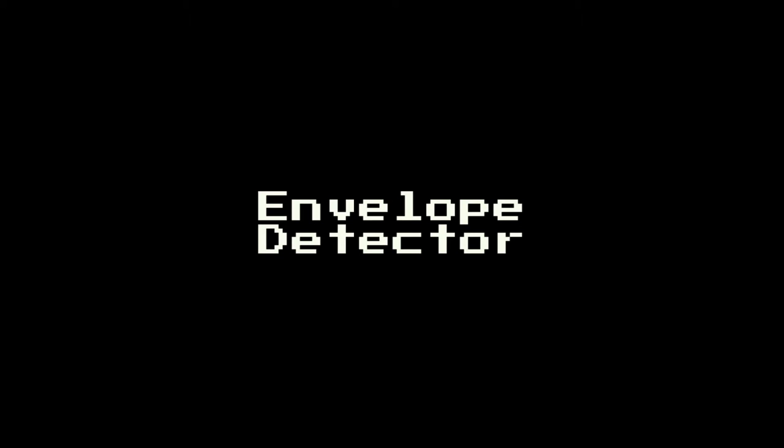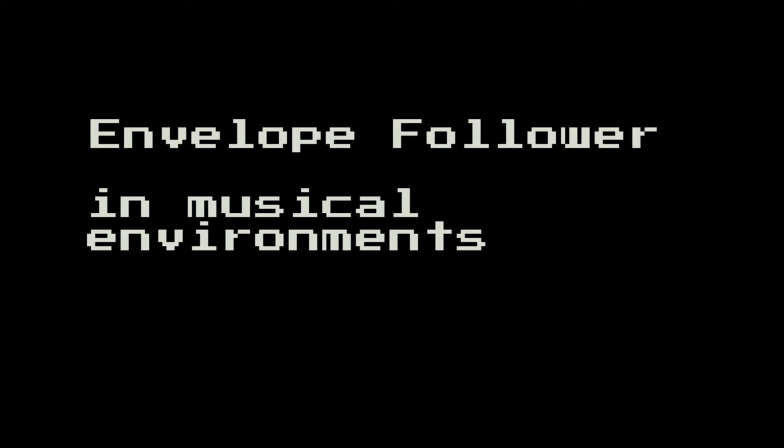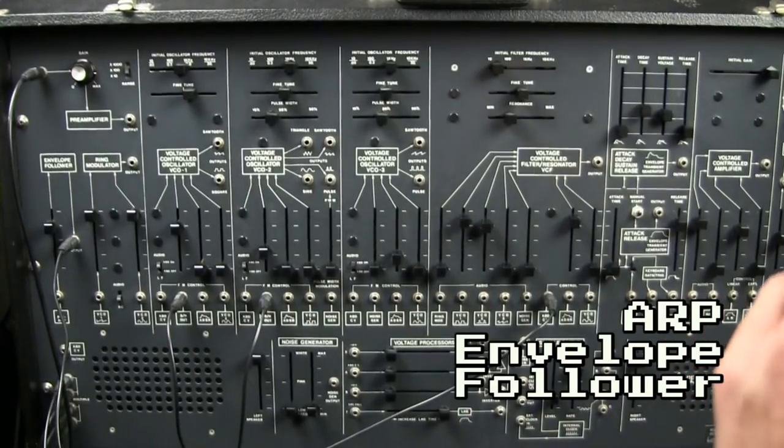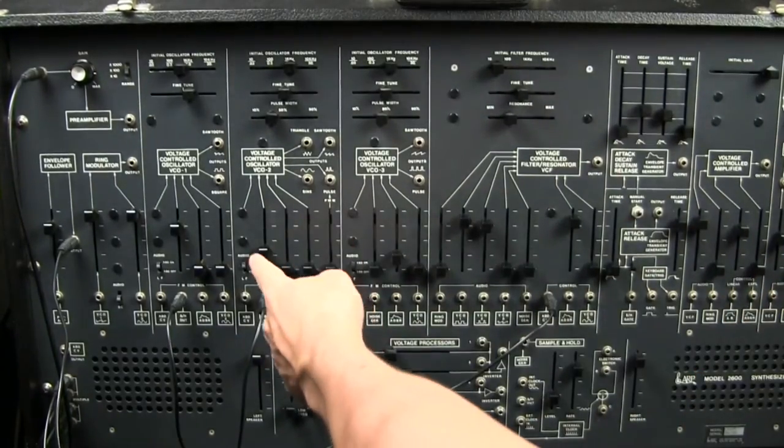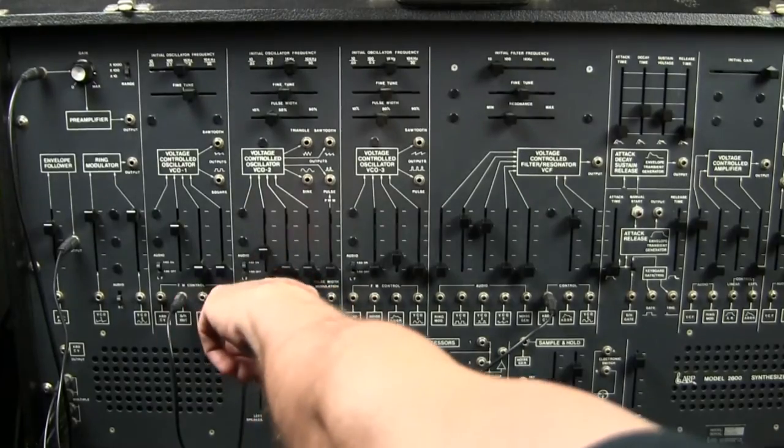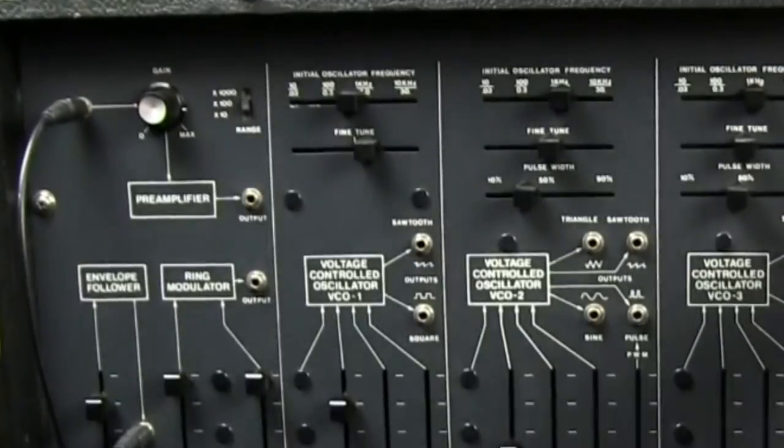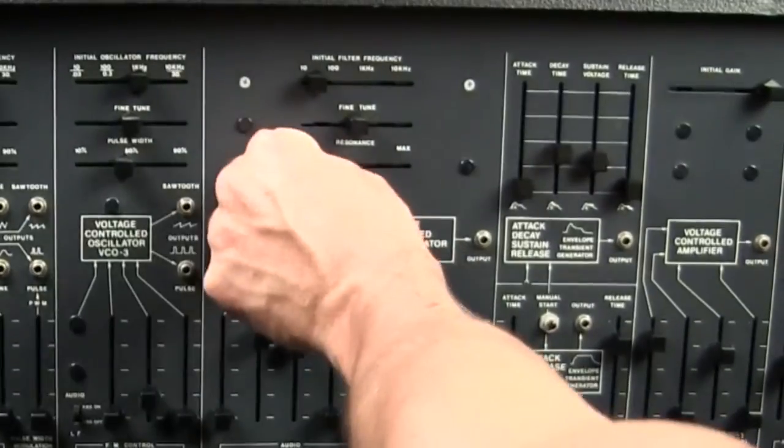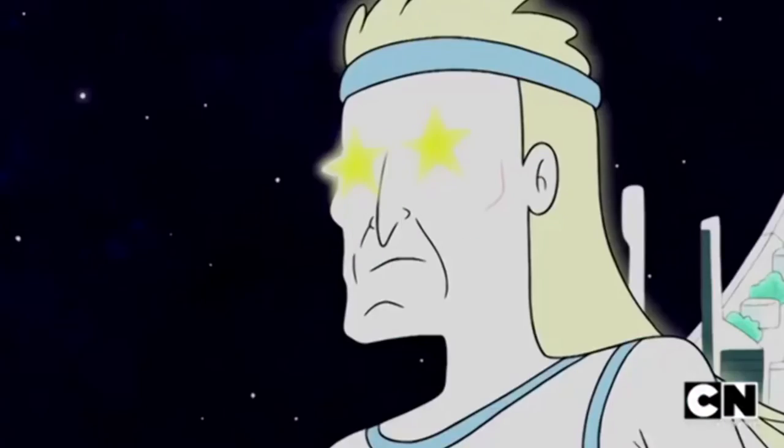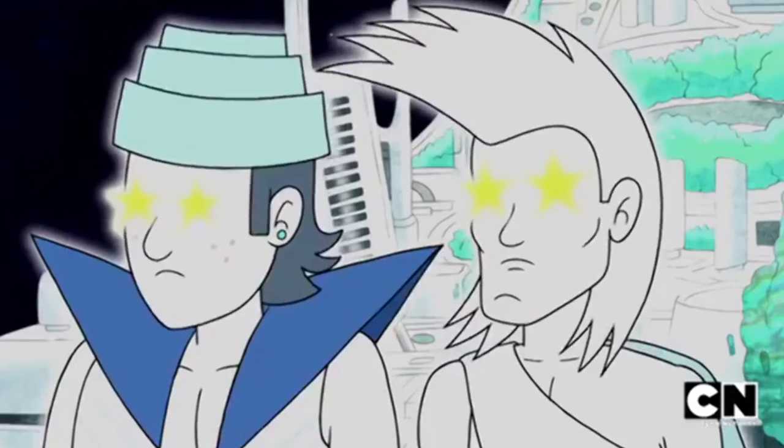Envelope detectors are often used as a component of other circuits. It is sometimes referred to as an envelope follower in musical environments. This is an example of an ARP envelope follower. It takes the amplitude of a given signal and converts it to a voltage. The control voltage varies with respect to the amplitude. This device controls functions in a synthesizer.